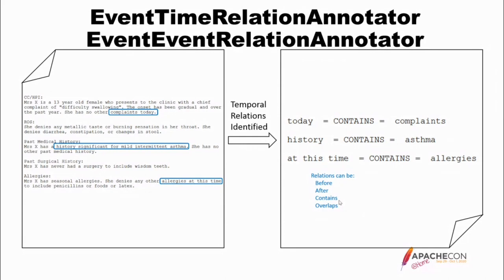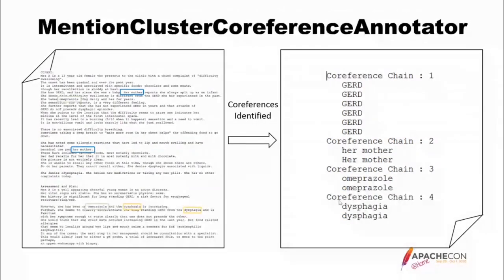The mentioned cluster co-reference annotator: text on the left with blue, green, and yellow boxes for different co-reference chains. On the right, things that are in chains. For GERD there are six mentions. You can see 'her mother' appearing in two different places in the blue boxes, and the co-reference annotator recognizes they are in the same chain — the same entity. The same applies to the drug and to disease disorder mentions.